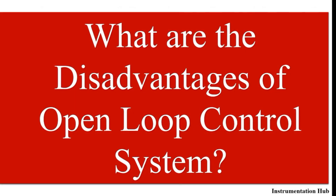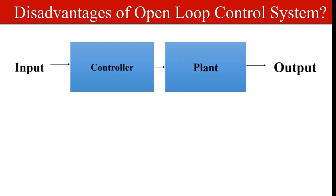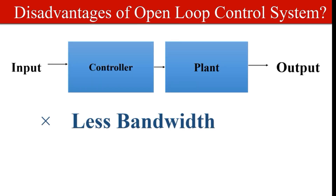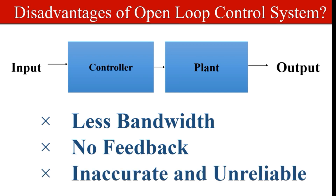The next question: what are the disadvantages of the open loop control system? Even when asked about disadvantages, start with a one-sentence introduction of the open loop control system: it is a system which gives output that depends on the input, but it does not provide feedback and does not have an error detector. Now the disadvantages: it has less bandwidth; since it does not have feedback, it sometimes gives inaccurate readings compared to closed loop systems; and the systems are unreliable.